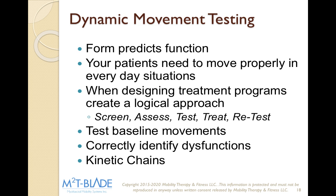When we want to look at our testing, we use dynamic movement testing. If you've done FMS or SFMA, there are lots of different assessment techniques you can use — as long as you can find out what's tight and what you need to create mobility with, you can use it. Form predicts function: we want to see what their form is, which will predict body function. Your patient needs to move properly in everyday situations. We always look at how clients squat — every action throughout the day involves squatting, whether sitting on the toilet, walking up stairs, or getting into your car. We test the squat because it tells us a lot about how our clients move and how we can help them move better. If I have a patient squatting and compensating a lot through the lower back, we need to look further to see how we can get her to move better.